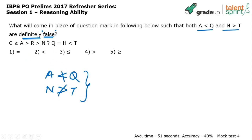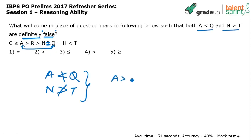Let's go through options one by one. Put option one — equal to — in place of the question mark. Compare a with q: a is greater than r, r is greater than n, n is equal to q. Golden rule number two of coded inequalities tells us that between a and q there is only one type of inequality — greater than — so definitely a is greater than q. That means a is not less than q, which is what we want. The first condition is satisfied by option one.